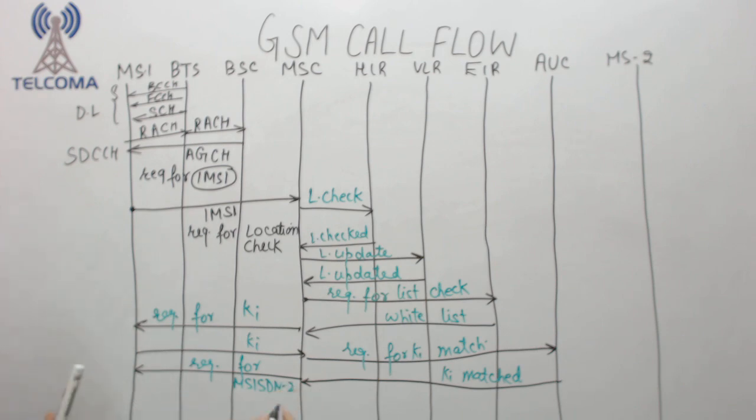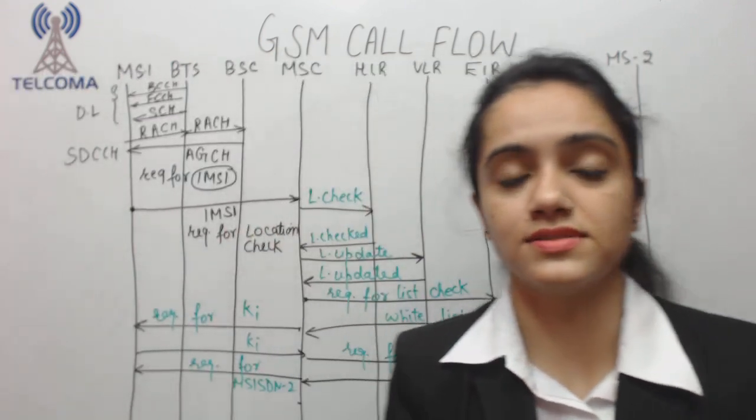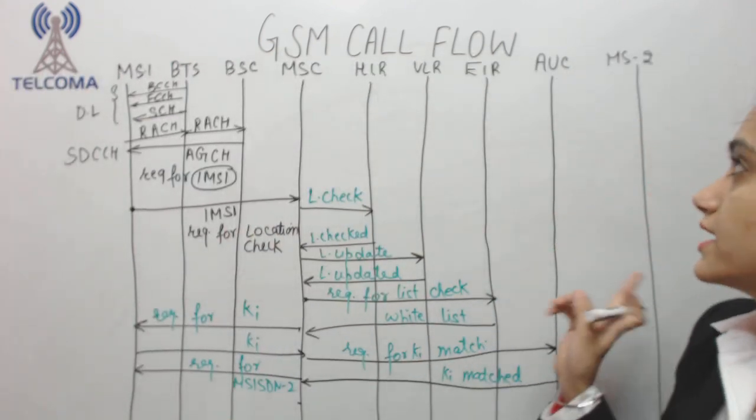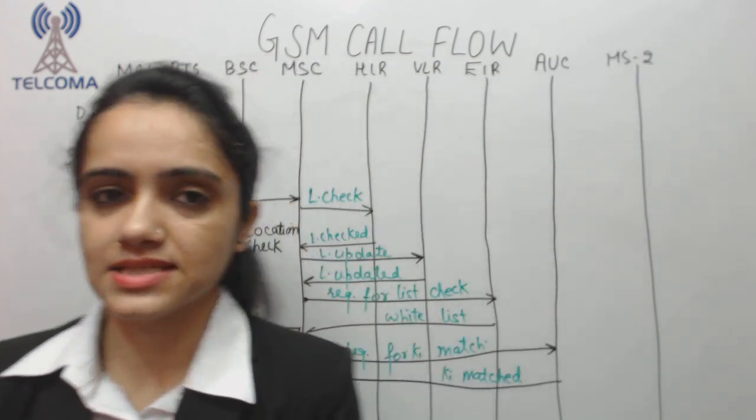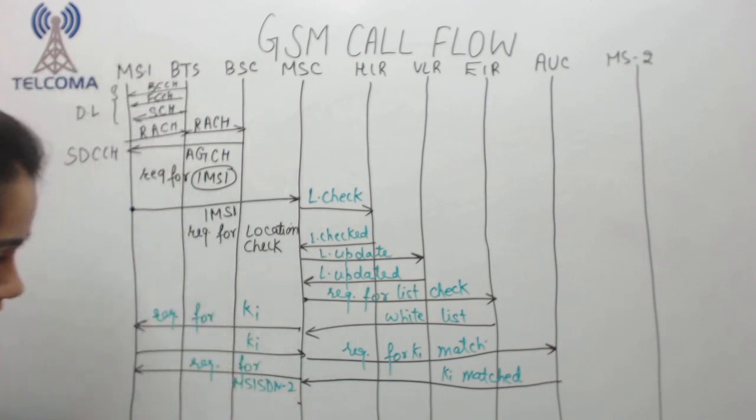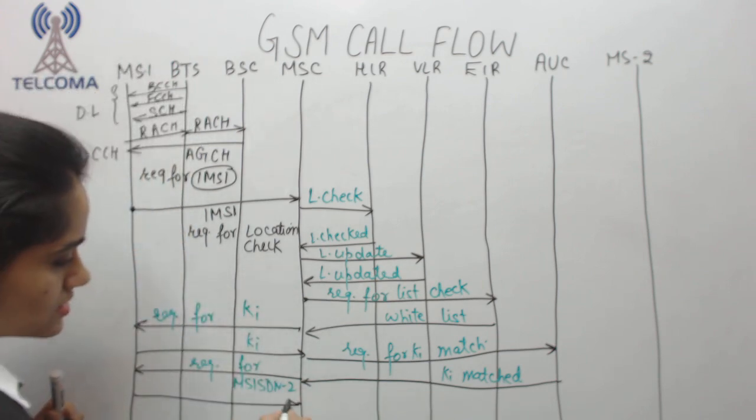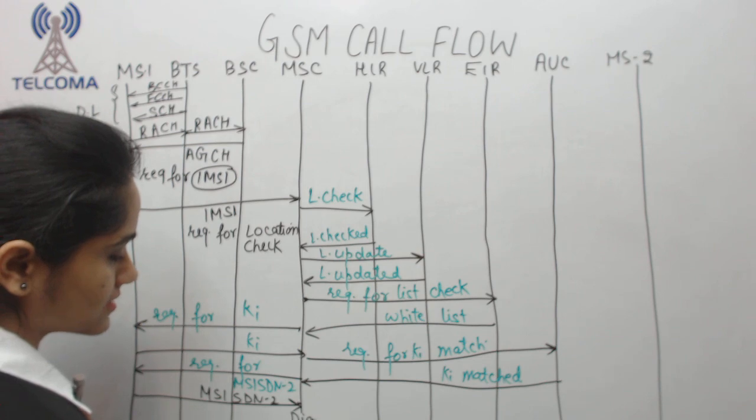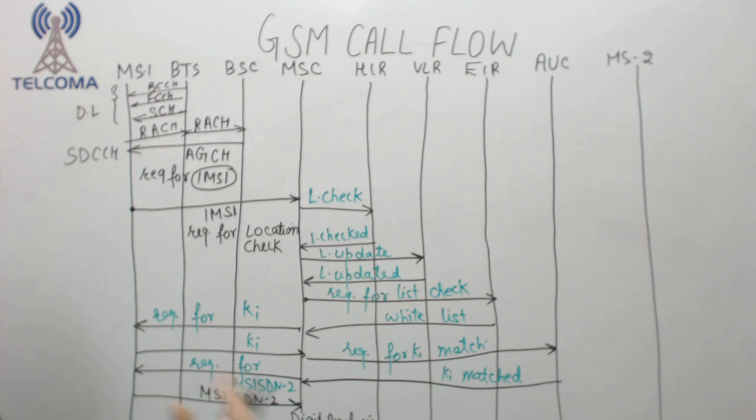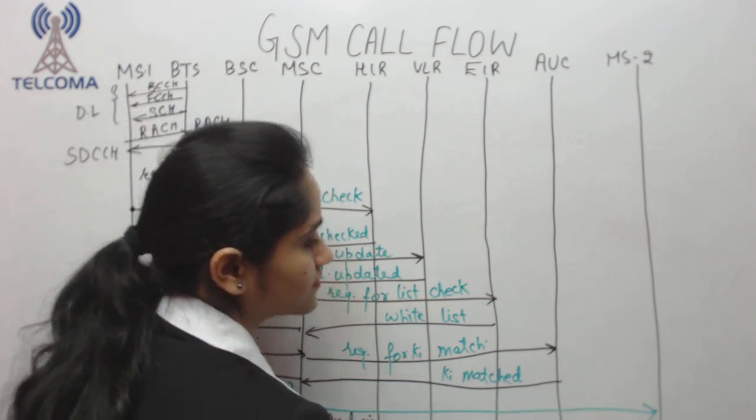MSC requests MSISDN2. MSISDN is Mobile Subscriber Integrated Service Digital Number, which is the contact number of the second party we need to connect. MSC is the entity which connects the call. In response, MSISDN2 is sent. MSC will do digit analysis, a feature through which we can find out where the person is located. Person found, so we have ringing.